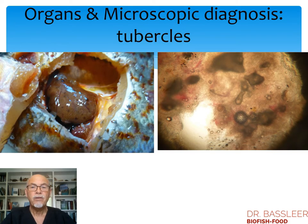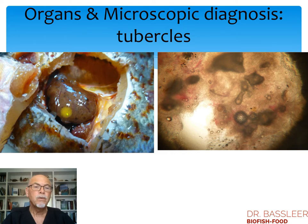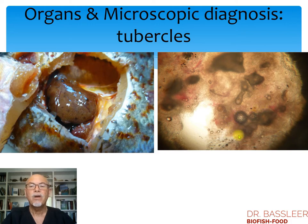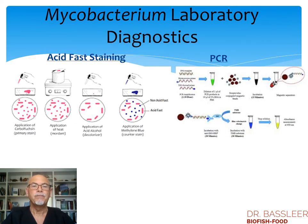In the organs, particularly of older fish — like here in the liver of this discus — we find tubercles: brown, dark, black patches in the organs. If you study this under a microscope, we see these tubercles in the liver, which is a reaction of the organ to isolate the colony of the bacteria, mycobacterium.